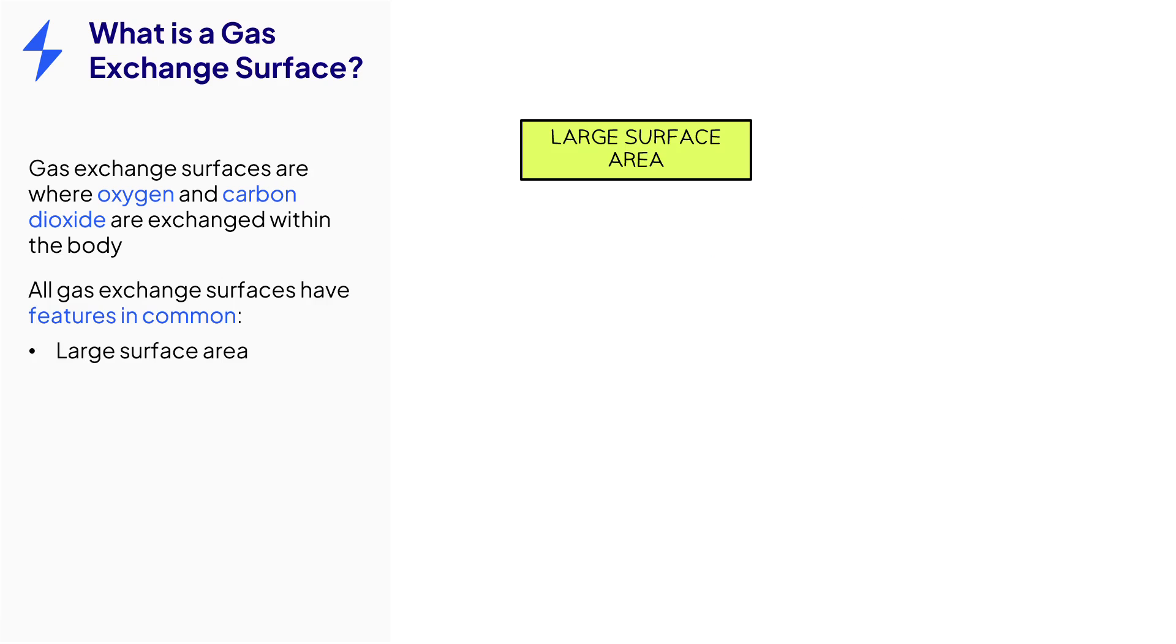These include a large surface area, thin walls, good ventilation, and good blood supply.